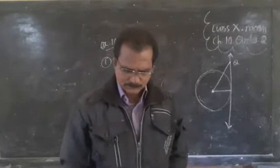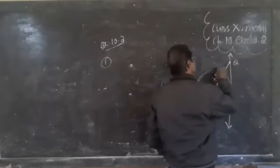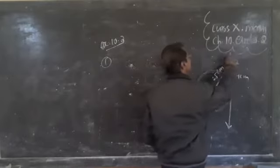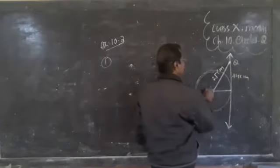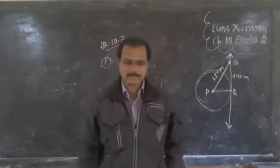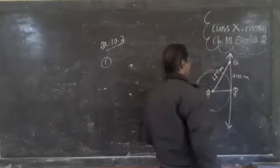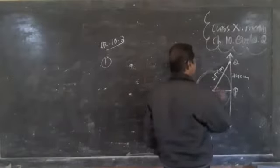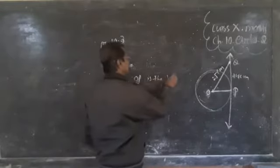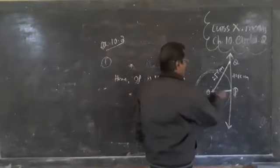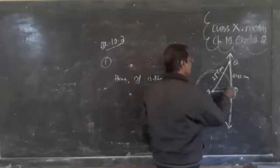Q is a point. The length of the tangent from Q to the circle is 24 centimeters. The distance of Q from the center is 25 centimeters. We need to find the radius OP. OP is the radius. The tangent is PQ, and the radius OP is perpendicular to the tangent PQ, intersecting at a right angle.